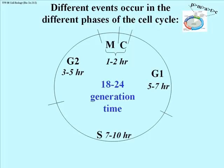There are other phases: G1, also referred to as gap 1; S, standing for synthesis; and G2, standing for a second gap. The S phase is the time in which DNA is replicated. Each of these phases has unique events that occur during them.